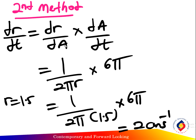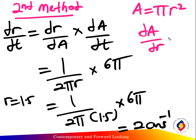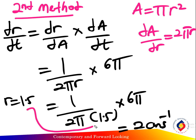The area of the circle equals pi r squared, and dA over dr equals 2 pi times the radius. So dr over dA equals 1 over 2 pi times the radius. The area with respect to time is 65 cm² per second when the radius equals 1.5 cm, so substitute into dr over dA: 1 over 2 pi times 1.5, times 65 pi.